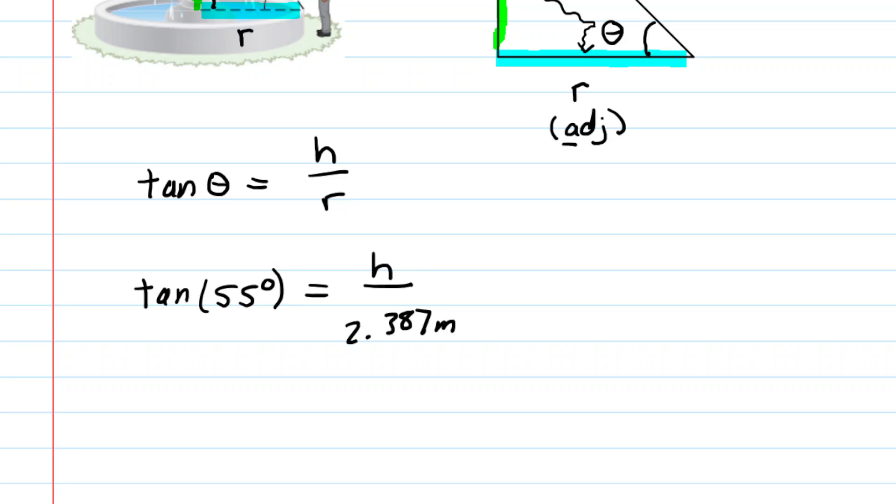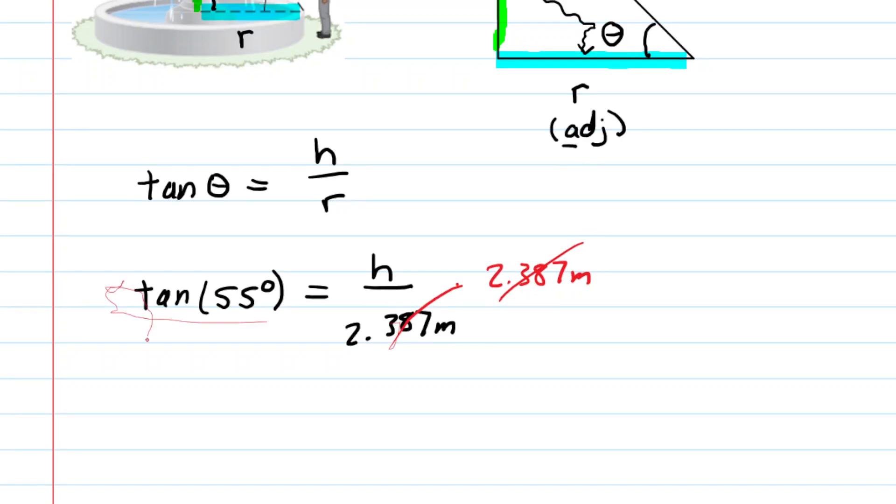So now all we need to do is multiply both sides of the equation by our radius. That will cancel it out on the right-hand side, and on the left-hand side we're just going to pick up our calculator and multiply 2.387 by the tangent of 55. Make sure your calculator is set to degree mode, since the angle is given in degrees.